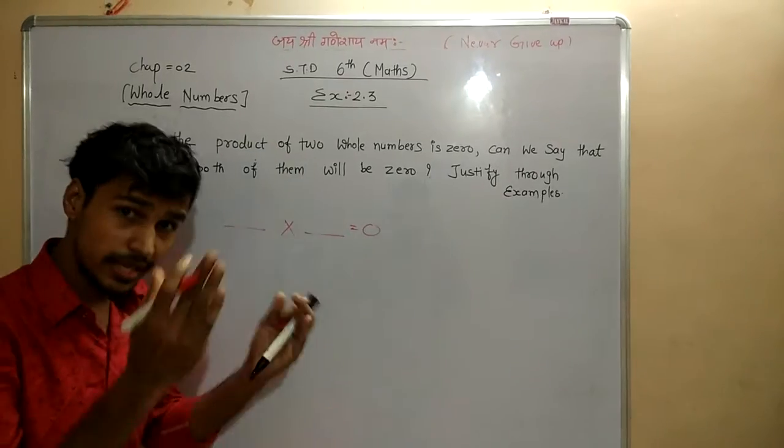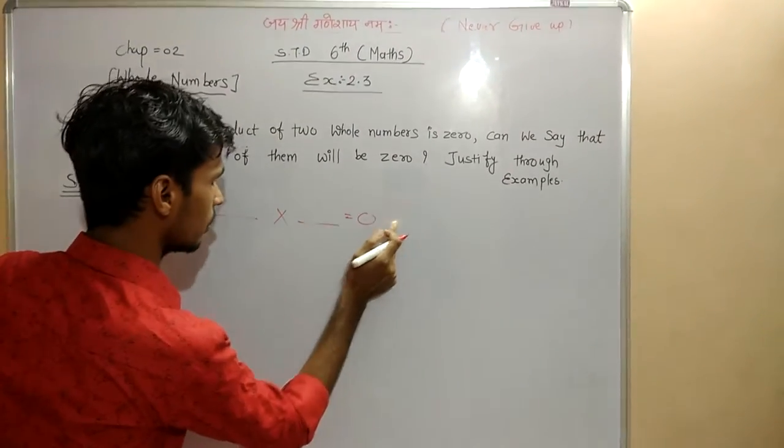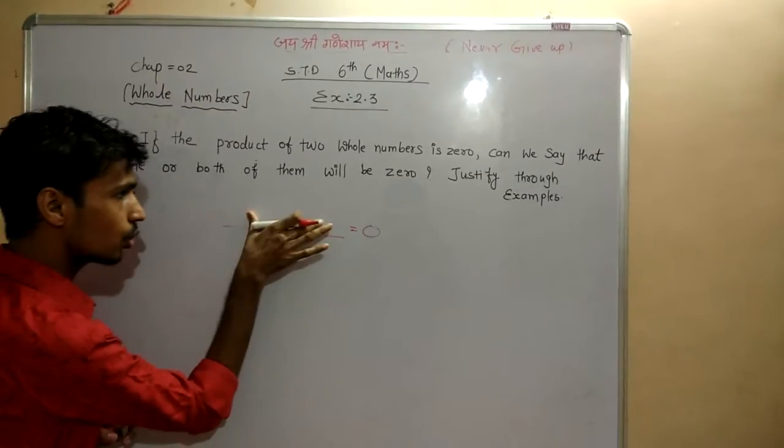So what can we say? Is that either one or both of them will be zero? Or either one or two will be zero?